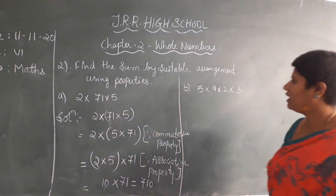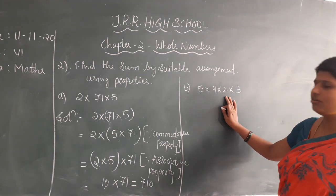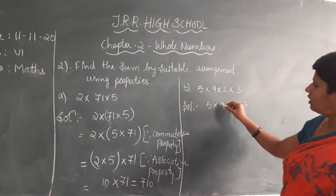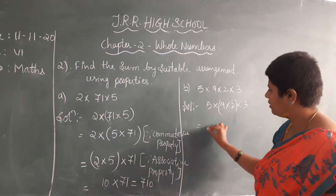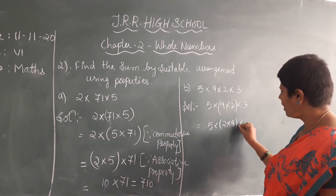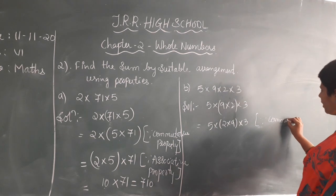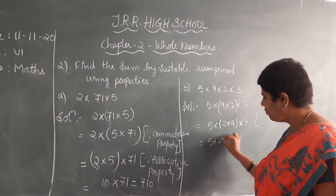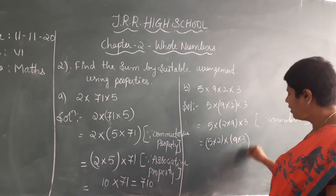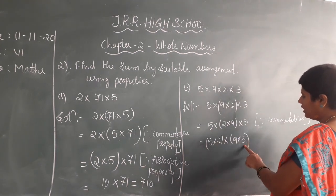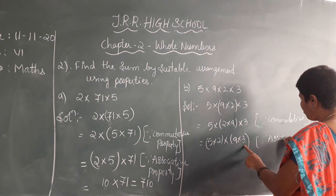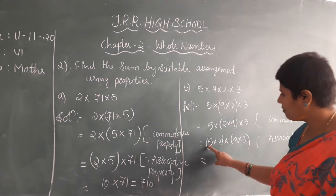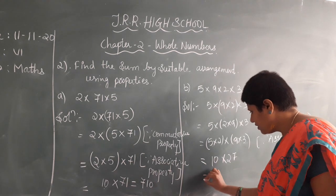Same as addition, now with 4 numbers with respect to multiplication. Write the solution: 5 into 9 into 2 into 3. Take the middle two numbers in the brackets: 5 into 2 into 9 into 3 — using commutative property with respect to multiplication. Again change: 5 into 2 in one bracket and 9 into 3 in another bracket — using associative property with respect to multiplication. 5 into 2 is 10, 9 into 3 is 27, which equals 270.